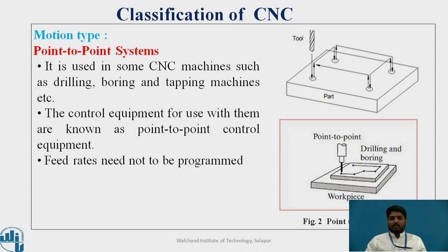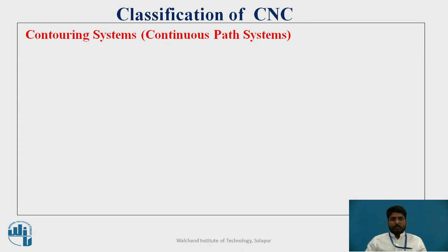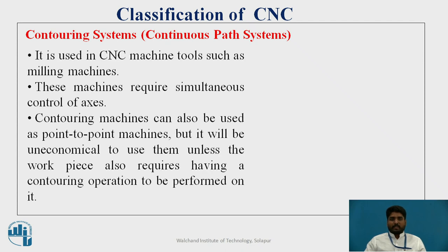As shown in the figure, the tool is located at a certain position. This point-to-point system is also called a positioning system — it goes to a certain point and then drills or bores according to the condition. The second type under motion type is the contouring system, also called the continuous path system. The continuous path system is used mainly for milling machines or when milling operations are performed. These machines require simultaneous control of axes. Contouring machines can also be used as point-to-point machines, but it would be uneconomical unless the workpiece also requires a contouring operation.